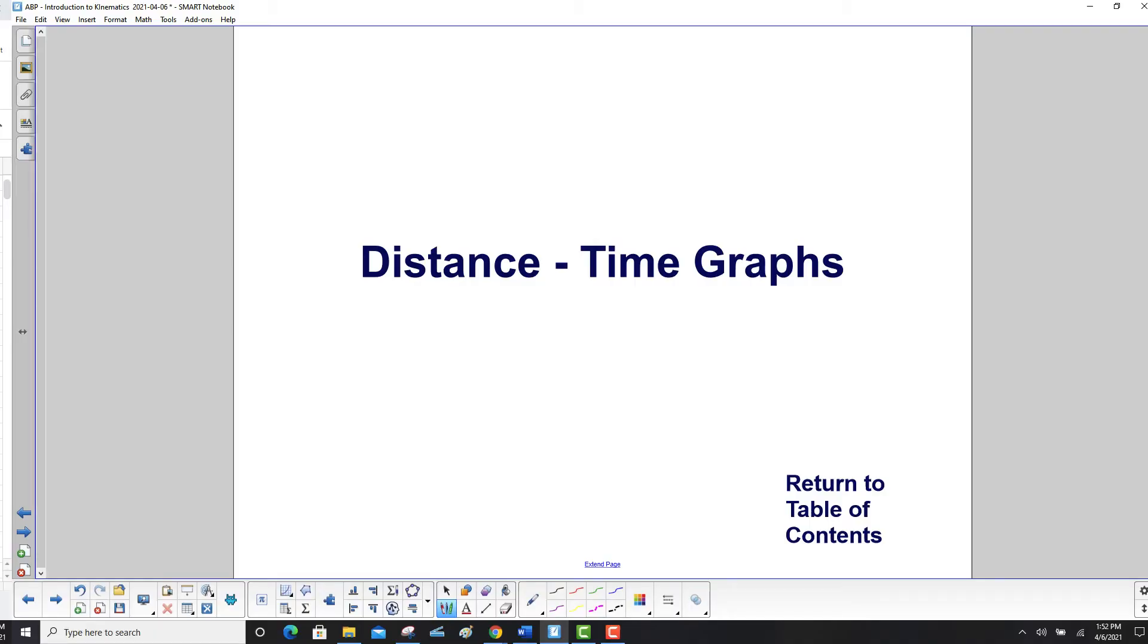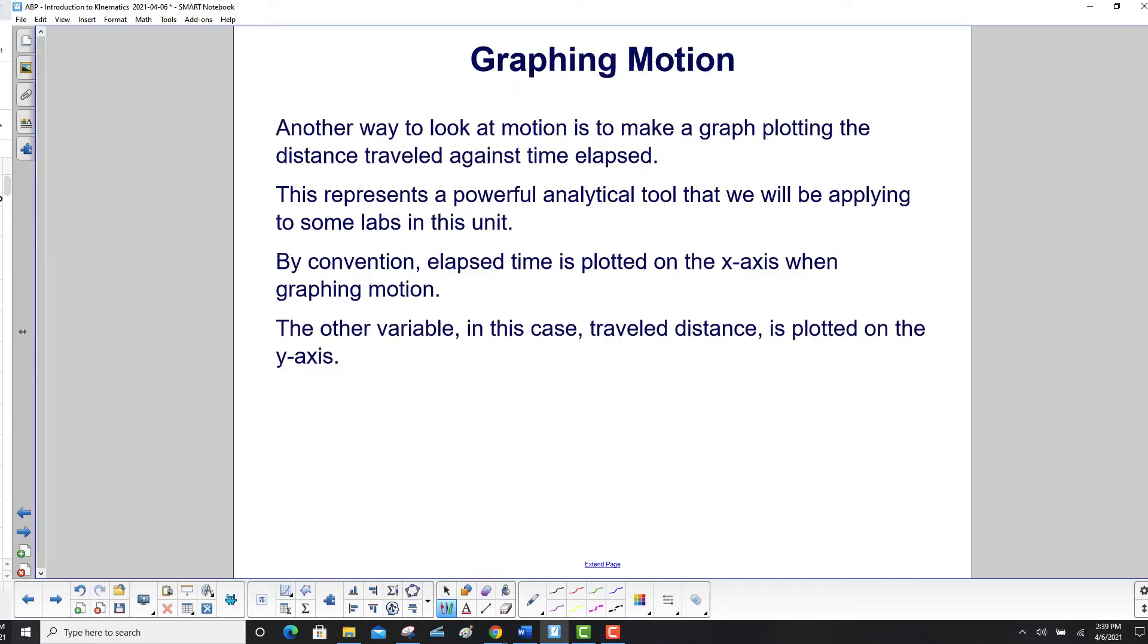Distance Time Graphs. Another way to look at motion is to make a graph plotting the distance traveled against time elapsed. This is a powerful analytic tool that we will be applying to some labs in this unit and labs further on in the course. By convention, elapsed time is plotted on the x-axis when graphing motion. The other variable, in this case travel distance, is plotted on the y-axis.